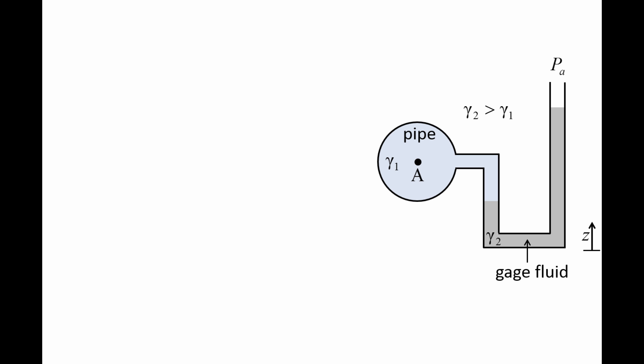We can determine the pressure in the pipe at point A by using the concepts from hydrostatics. Let's label a few important points in the manometer. Point B is at the same elevation as point A. Point C is at the interface between the fluid from the pipe and the gauge fluid. Point D is at the same elevation as point C inside the gauge fluid. Point E is at the interface between the gauge fluid and the atmosphere. The vertical distance between points A and C is H1, and the vertical distance between points D and E is H2.